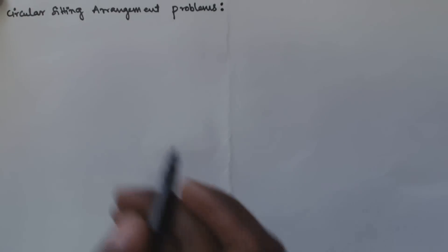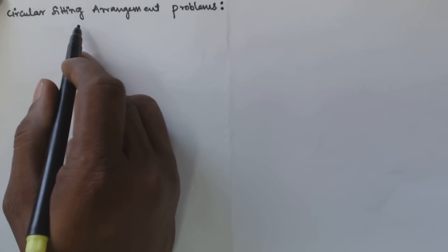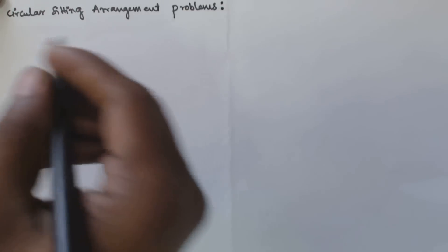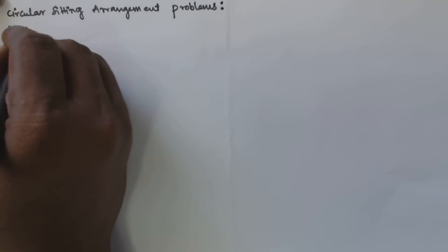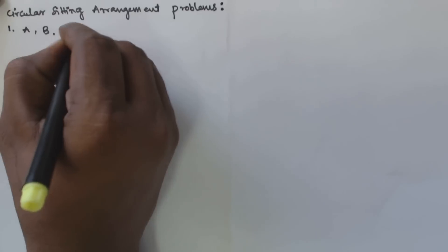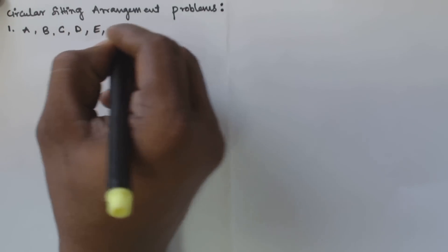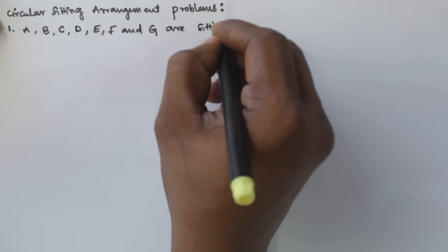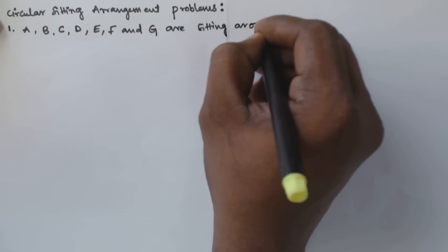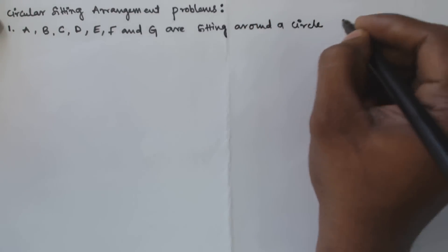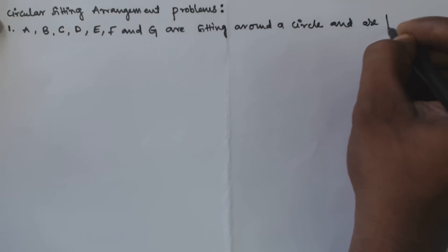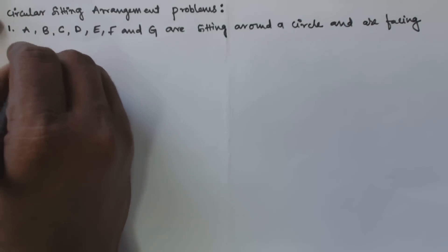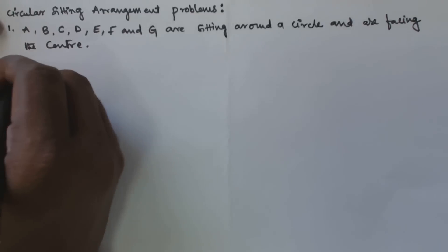Hello friends, in this video we will see problems based on circular sitting arrangement. Seven persons A, B, C, D, E, F, and G are sitting around a circle, facing the center.